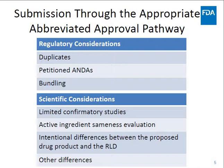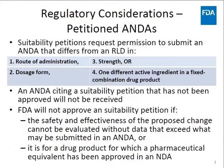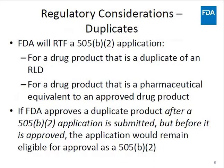If FDA approves a pharmaceutical equivalent to a proposed product before a B2 application is submitted, meaning that there is an RLD to reference in an ANDA, FDA will refuse to file the application. If FDA approves a duplicate product after a 505B2 application is submitted but before that application is approved, the application that was submitted would remain eligible for approval as a B2 application. For reference, pharmaceutical equivalents are products that contain the same active ingredient, dosage form, route of administration, and strength.